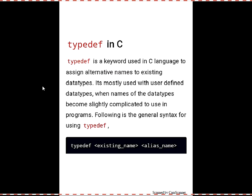So coming to the topics: typedef in C language. First we will see what is typedef and how we are going to use typedef in C language. Typedef is a keyword used in C language to assign alternative names to your existing data types — whatever data types you have learned so far, that is int, float, long, double, whatever. If you find those names complicated or hard to use, we can give an alternative name to the existing data type.